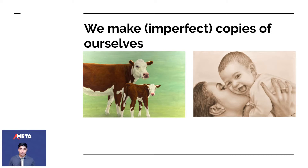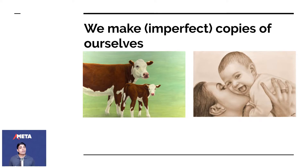At the core of evolution is that we make imperfect copies of ourselves. A long time ago humans thought that when any animal makes children they're perfect copies, but we know that is not true. We make slightly imperfect copies whether it be a cow, a human being, or a very primitive species like a fish. They all make slightly different copies of themselves, and we do this by duplicating our DNA.